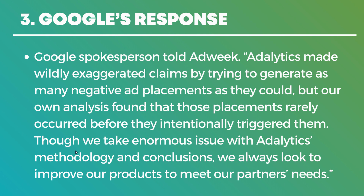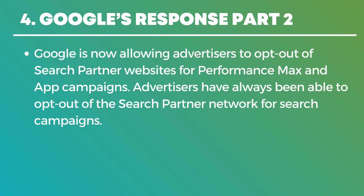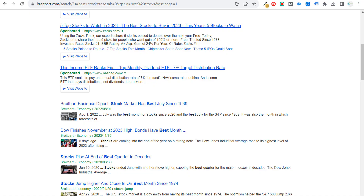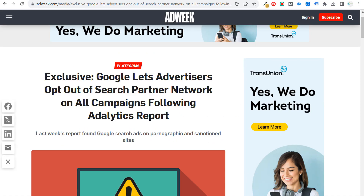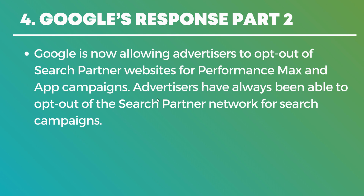After the Adalytics study, a couple of large advertisers reached out to Google and basically said they would stop their Performance Max campaigns unless Google did something to fix this. Google's response — and I saw this article in Adweek just a couple hours ago — is that Google is now letting advertisers opt out of the search partner network on all campaigns. This is something they never allowed before for Performance Max and app campaigns. Advertisers have always been able to opt out for search campaigns, but not for Performance Max and app campaigns, which are also running search advertising. I haven't seen exactly how to do it in Performance Max yet, but you can always reach out to Google for help.